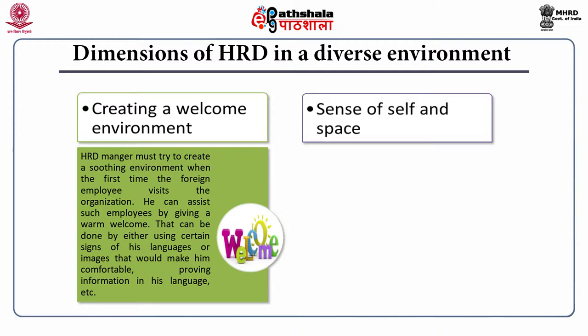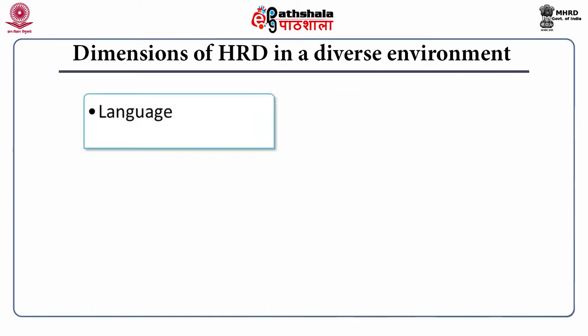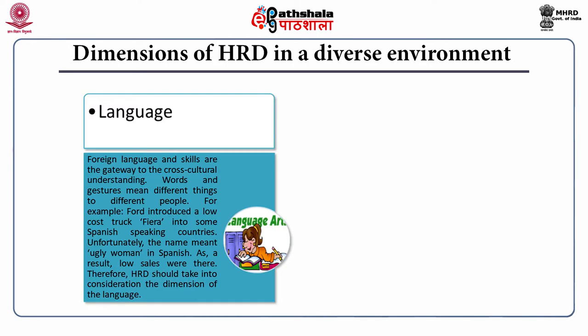Another dimension is sense of self and space. It matters a lot to an expatriate how much personal space is given to them. Generally in India, people prefer to work in groups and avoid an individualistic approach, which is not the case in western countries. HRD should ensure that the individual has their own space. Another dimension is language — foreign language skills are the gateway to cross-cultural understanding. Words and gestures mean different things to different people. For example, Ford introduced a low-cost truck called Fiera in some Spanish-speaking countries, but unfortunately the name meant 'ugly woman' in Spanish, resulting in low sales. Therefore, HRD should take language dimensions into consideration.